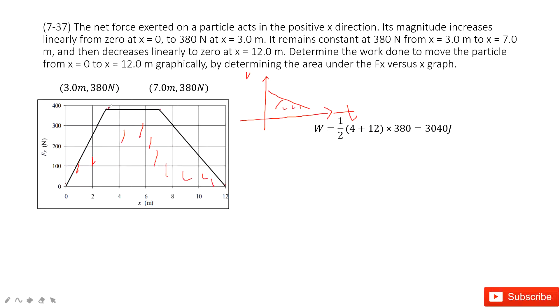So how can we find the area under the line? For this one, we can see this side is how much? 7 minus 3 is 4. And this side, 12 minus 0, is 12. And then the height, it tells us, is 380 Newtons. So we can get the area very easily: one half times this side plus this side, then times the height.